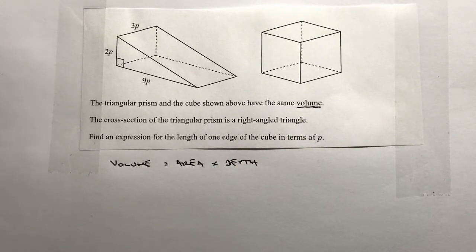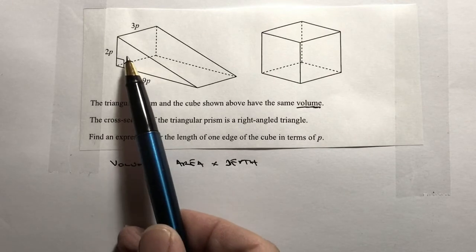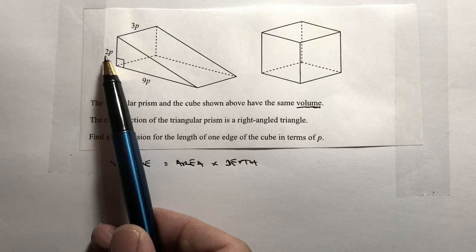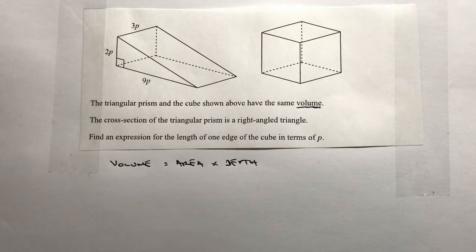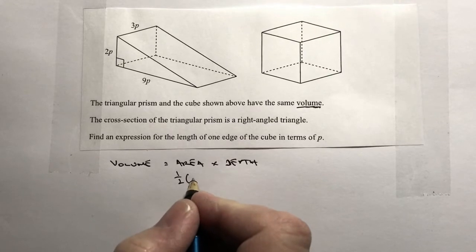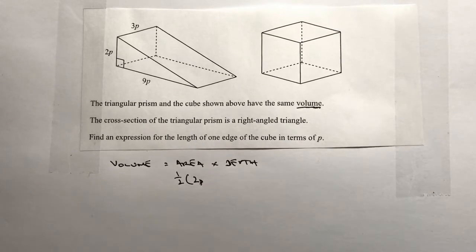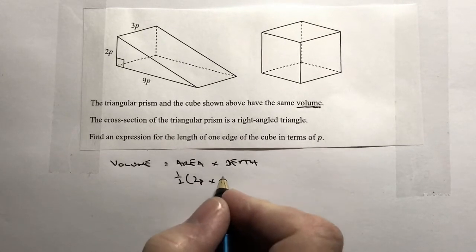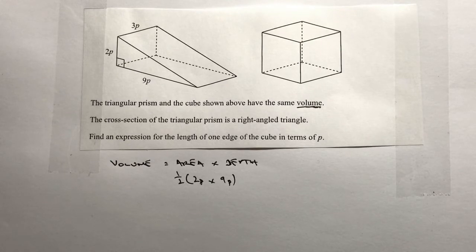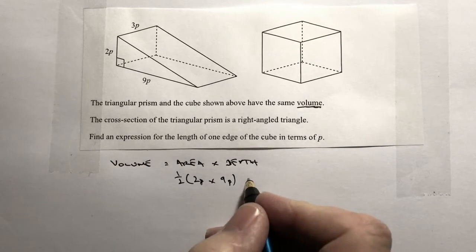If we look at the area of this triangle here, it's going to be a half of 2p times 9p. So the area is a half of 2p, which is the height, multiplied by 9p, which is the length. Then the depth in order to work out the volume of this triangular prism is going to be 3p.